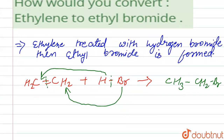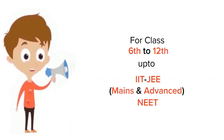So, when ethylene reacts with HBr, it forms ethyl bromide. Thank you.